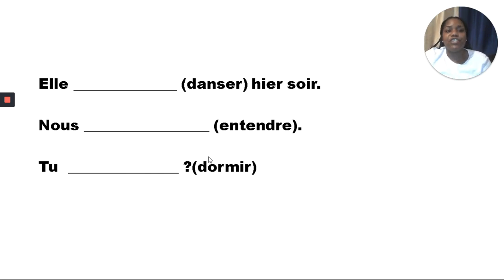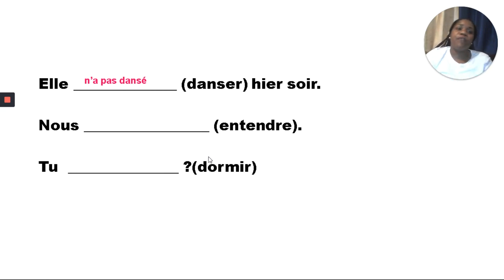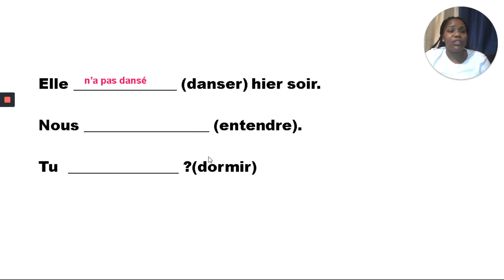Continuing on, we want to say she had not danced last night. We're going to use 'a,' which is the subject agreement for 'elle,' but we want to say 'had not,' so it will be: 'elle n'a pas dansé.' Remember, the past participle formation must agree: -ER verbs take on the É accent aigu; -IR verbs, you drop the -IR and add an -I; and -RE verbs, you drop the -RE and add a -U. We also see 'entendu' — you had not heard — and then you had not slept.